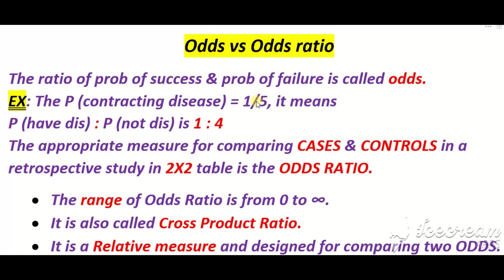The probability of contracting any disease — let's suppose the probability of having a disease is 1 over 5. It means the probability of having the disease ratio to probability of not having the disease is 1 ratio 4. This 1:4 ratio is called odds. If you have one disease case compared to how many do not have the disease.